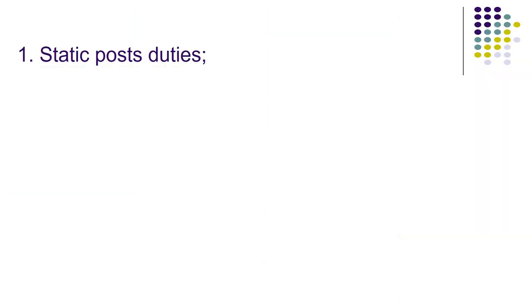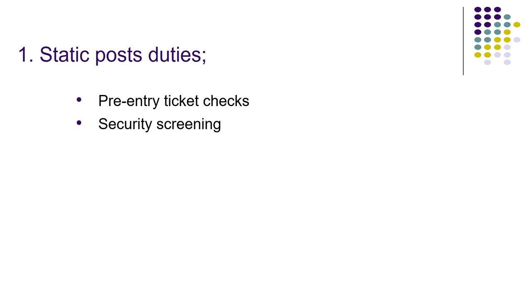Number one: static post duty. Static post duty means you will not move around the area — you will stay in one place and perform your security tasks. Pre-entry ticket check: the security guard will check the ticket before the public enters the area. You will stay at one post and check the ticket. Security screening: you have to search people in the screening area. The organizer establishes one post for security screening and you stay there to perform the screening.